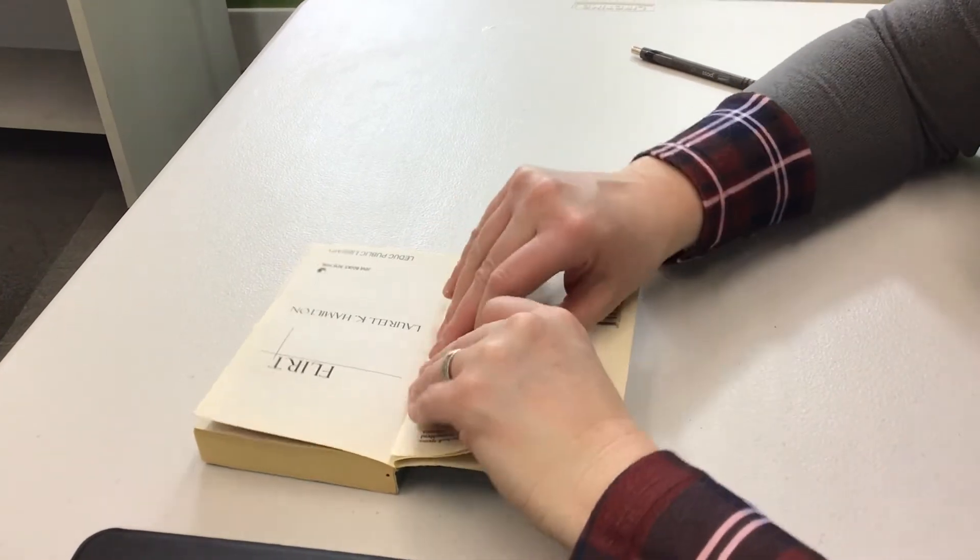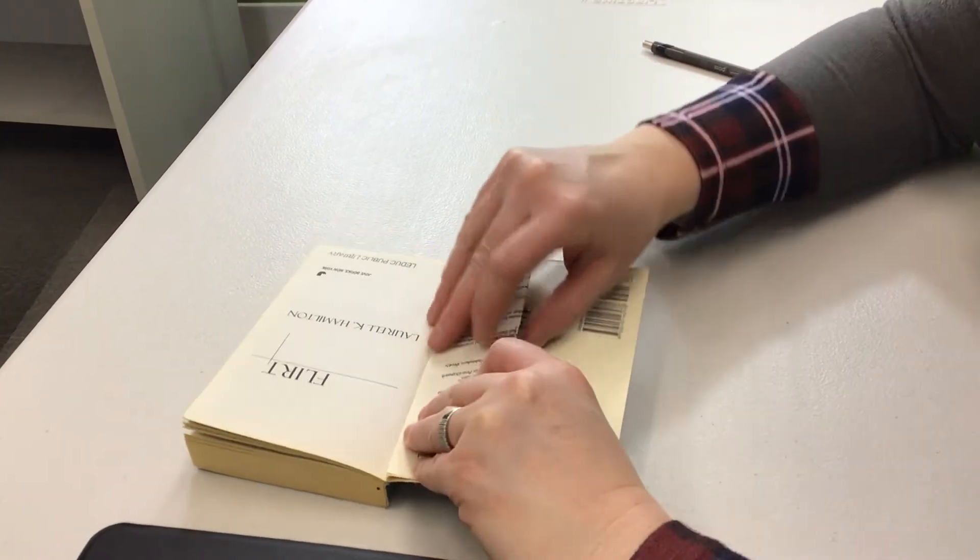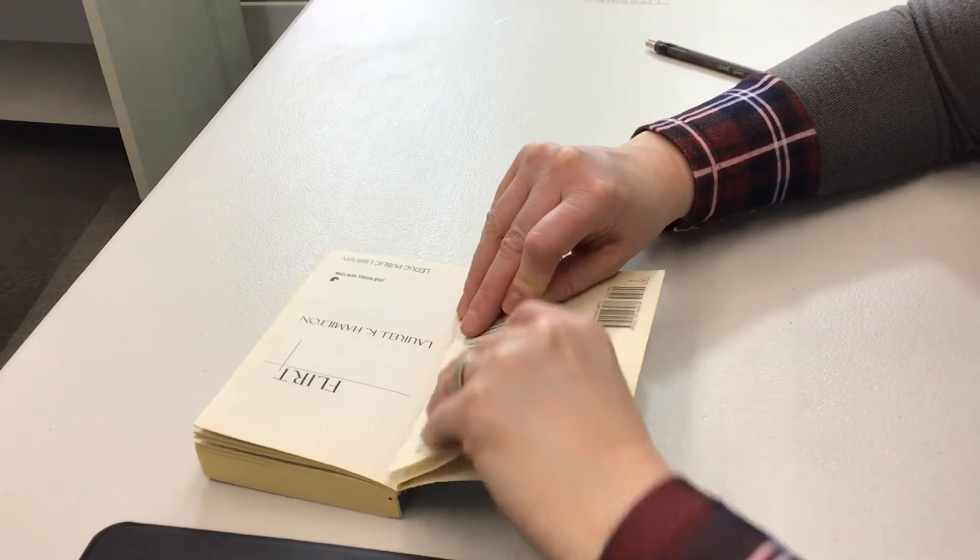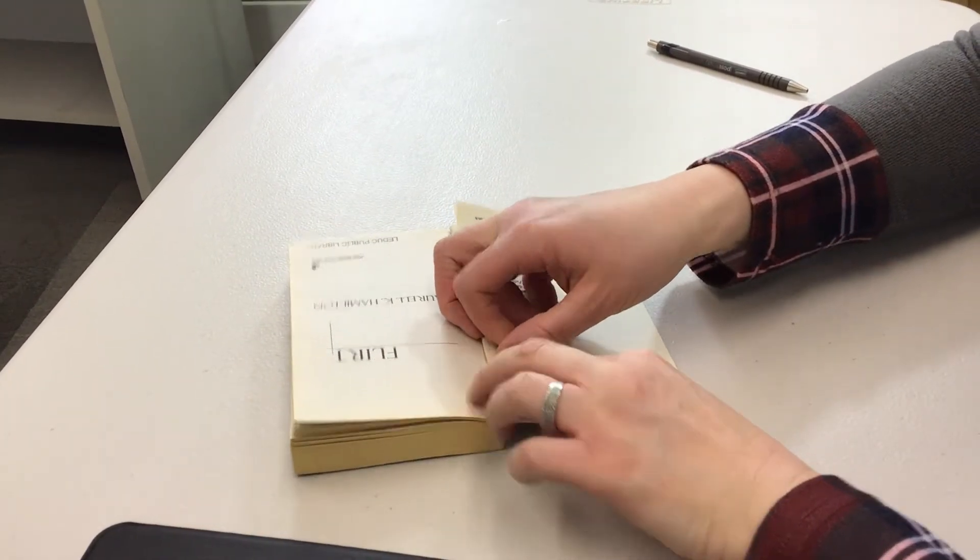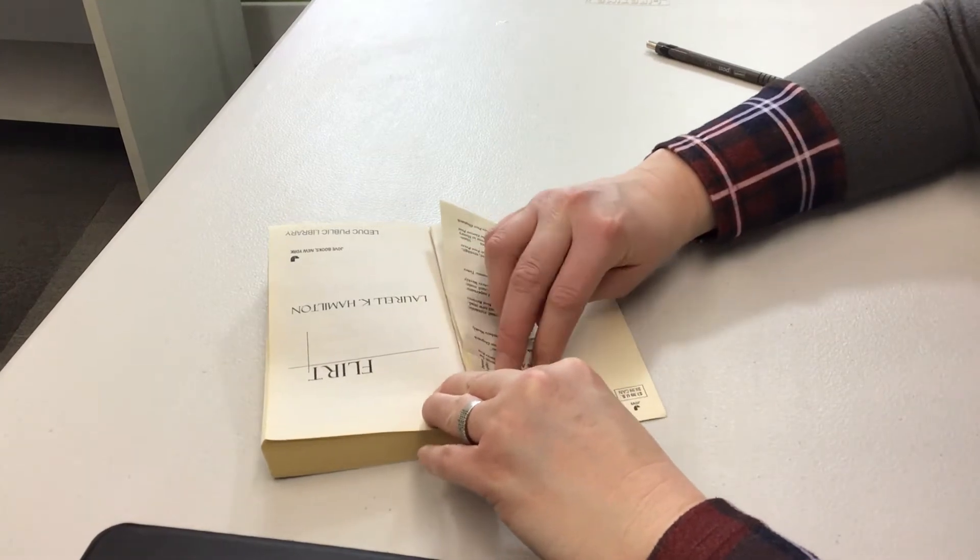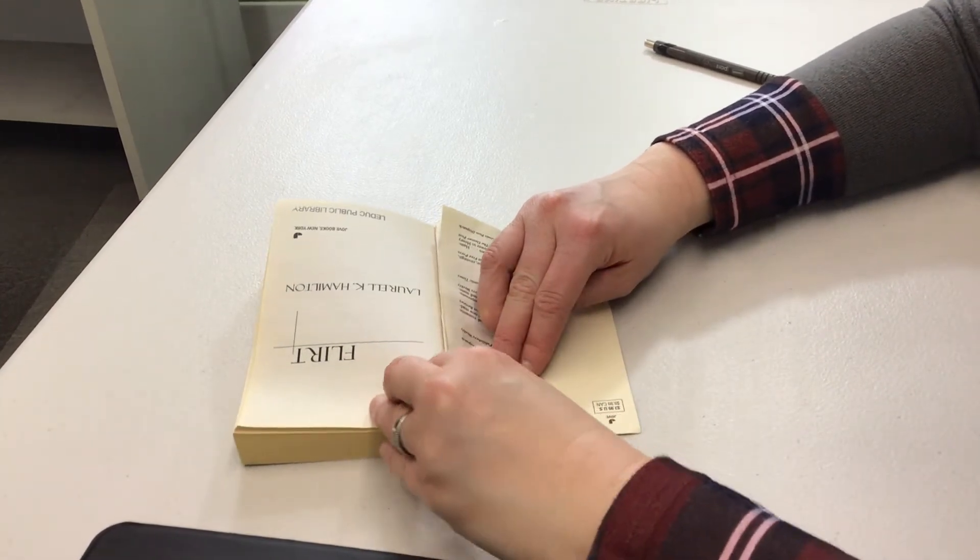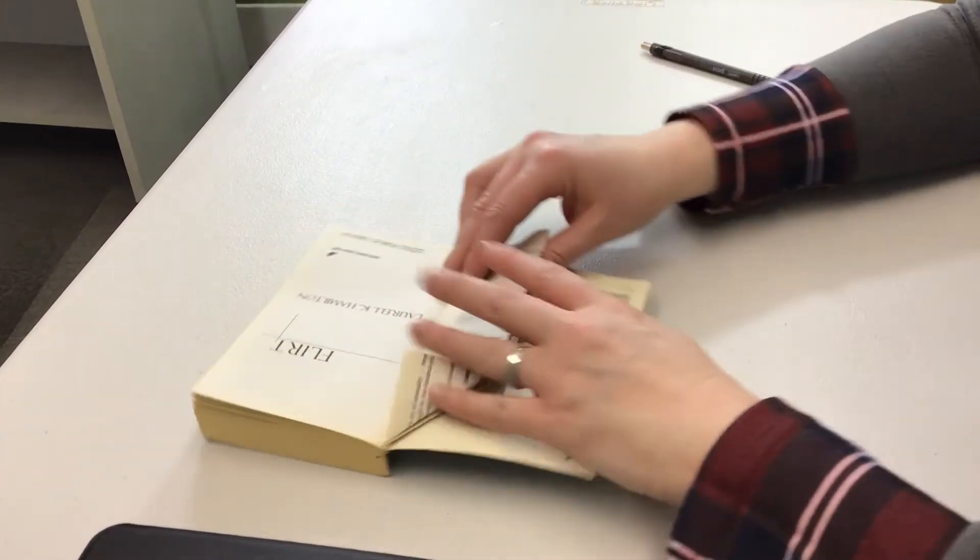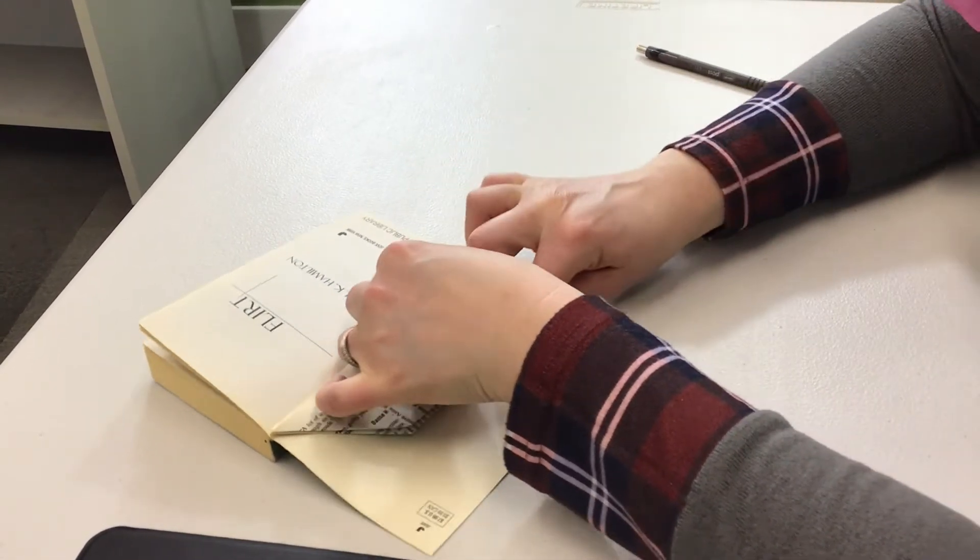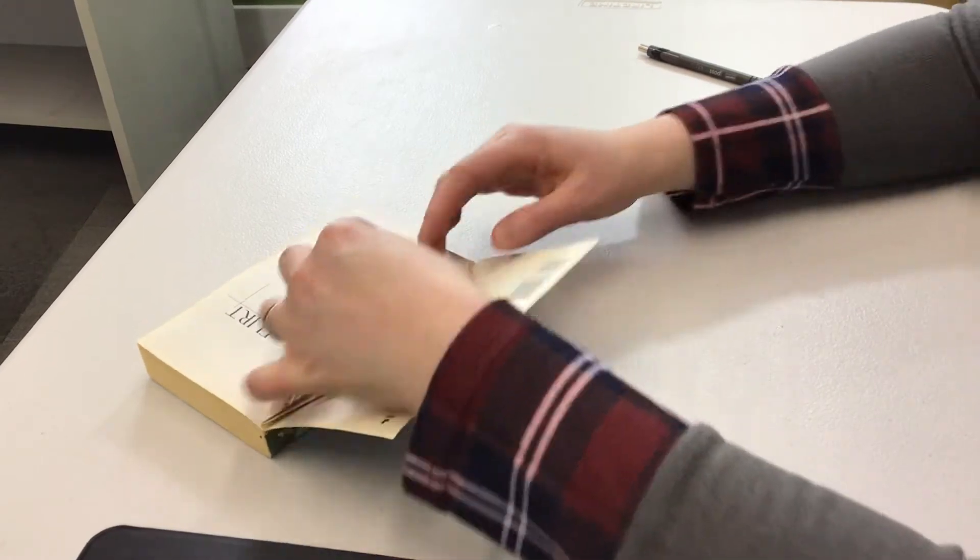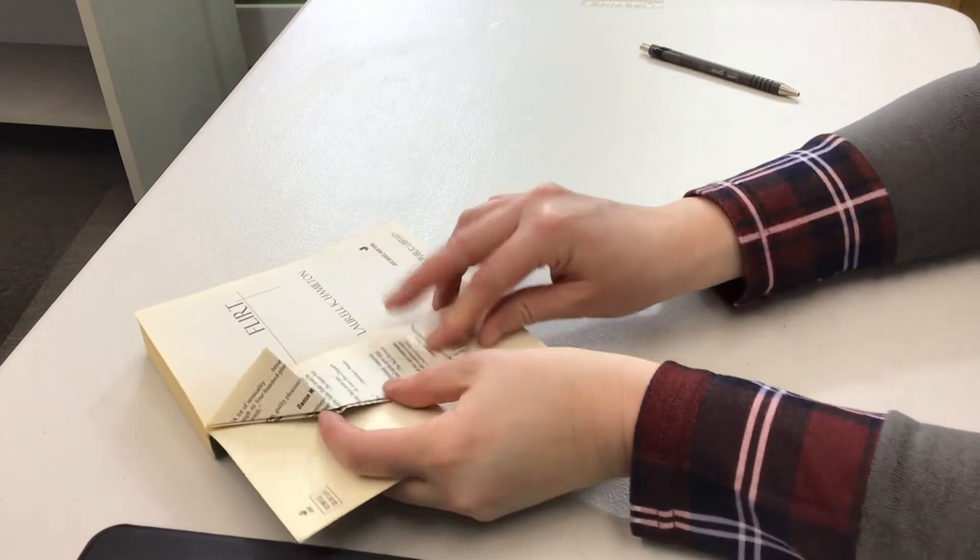I'm just going to show you one more here. So again, nice and straight corners. Take your corner, fold it up to the center. Fold it down nice and tight. The sharper you can do your folding, the better. And then already you can see the two layering up there nicely.